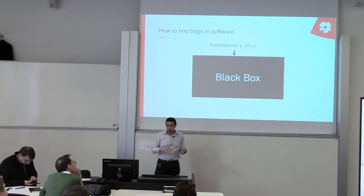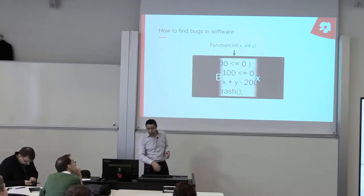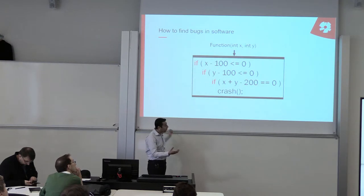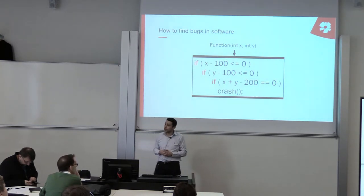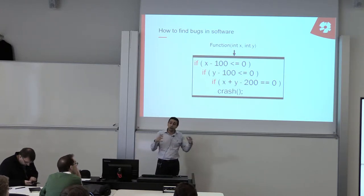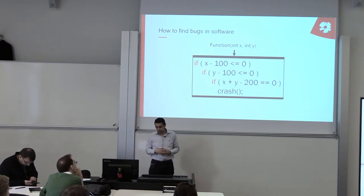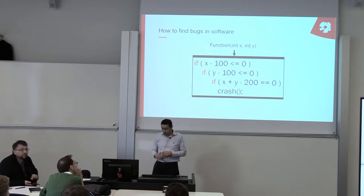So what we need to do in order to reduce the input space — one way is to open this box, which we call white box testing, and look inside in order to find some rules that allow us to reduce the input space. But even this, now when we are living in the big data world, we also have big code.